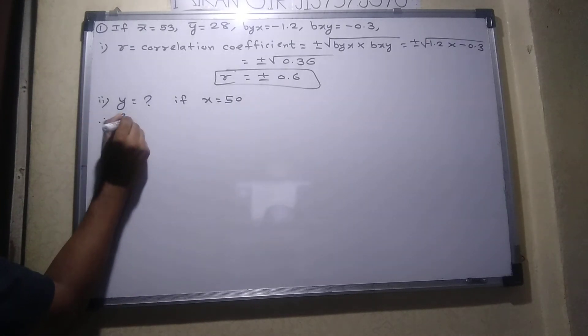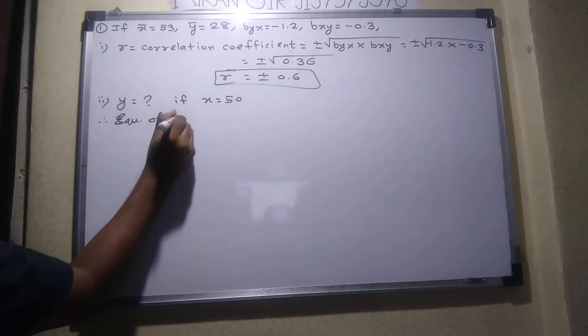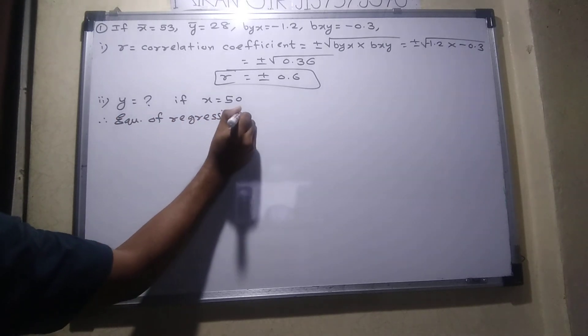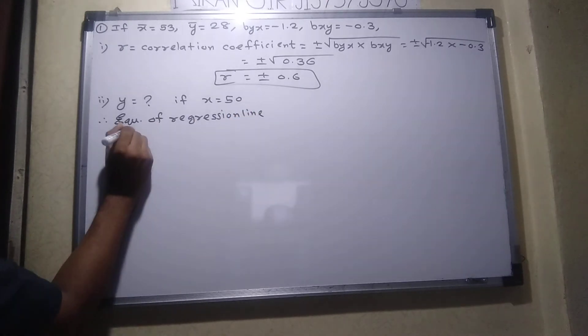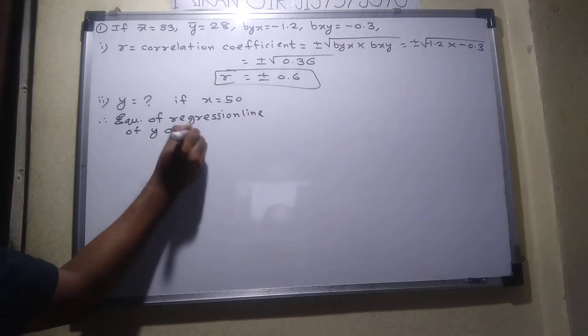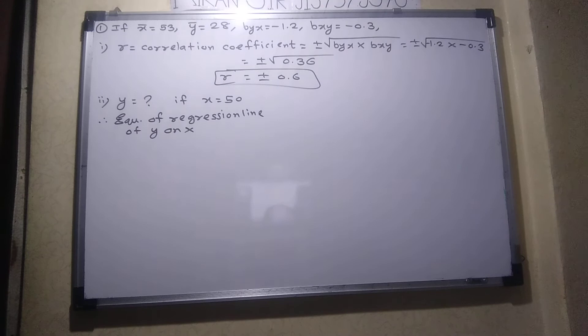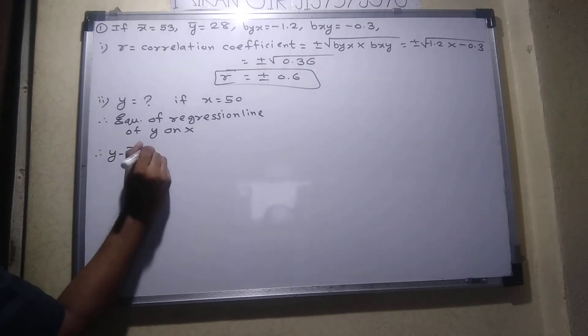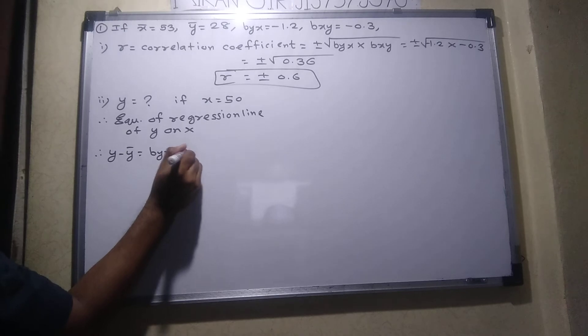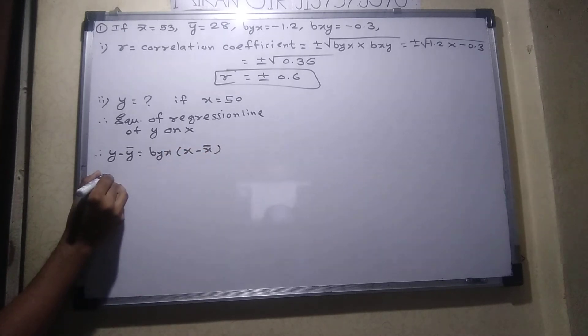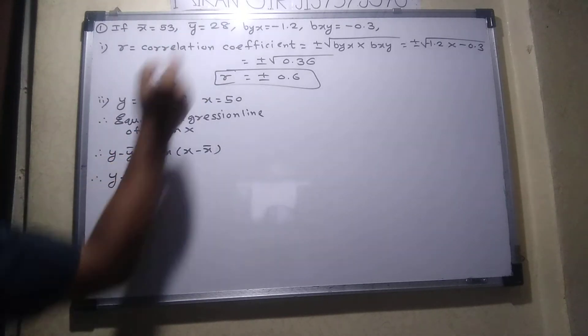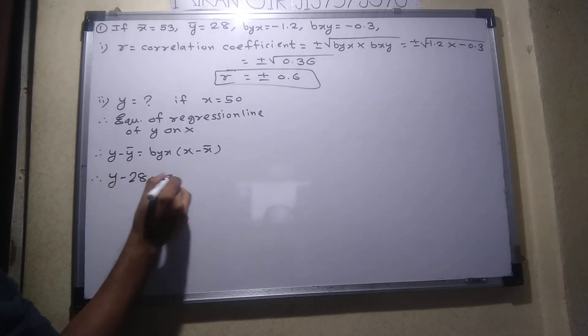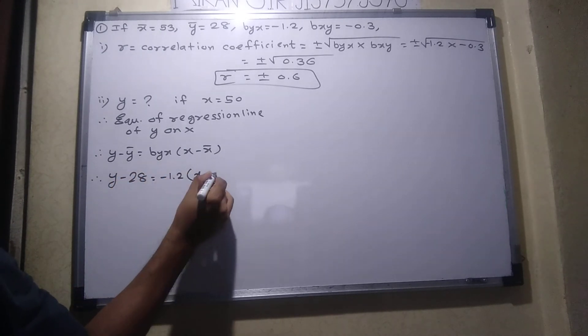So equation of regression line of y on x. y minus ȳ equals byx times x minus x̄, am I right? y minus 28 equals minus 1.2 times x minus 53.